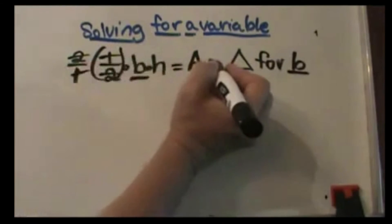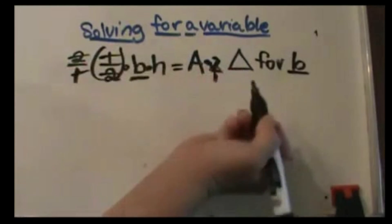So if I multiply the left side by two, I have to multiply the right side by two over one, which is just two.